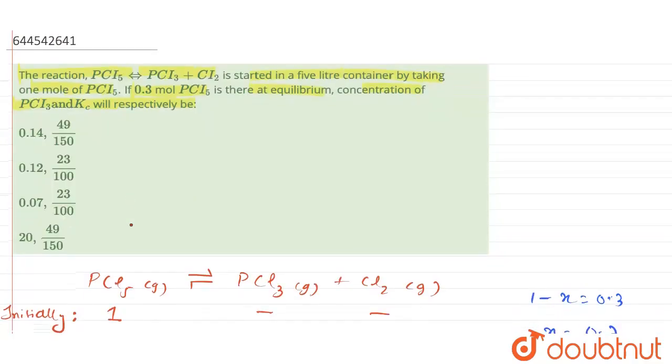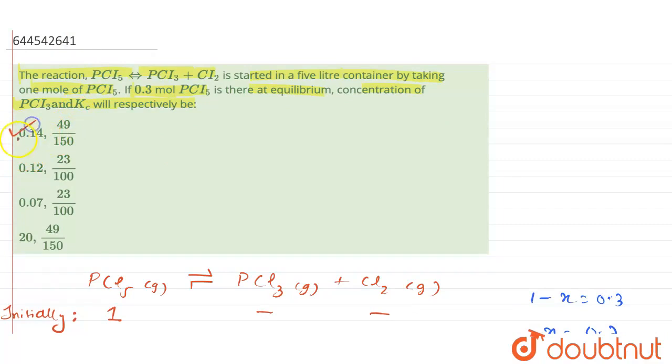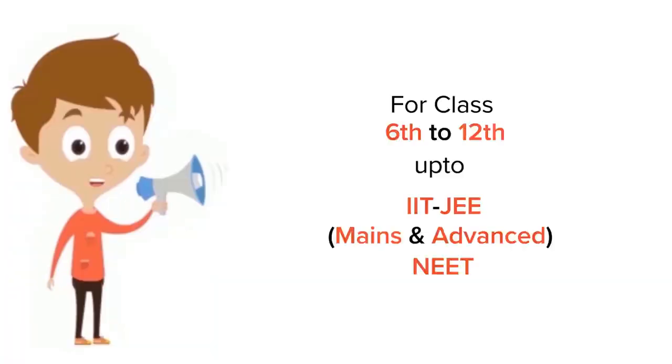Let's see the options which we have. The first option itself, the value for the concentration of PCl3 is 0.14 and the Kc value is 49 by 150. This will be the correct answer for this question. Thank you.